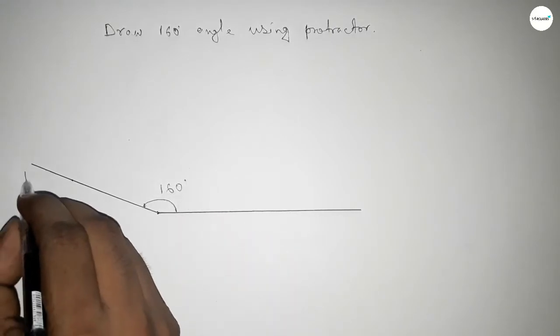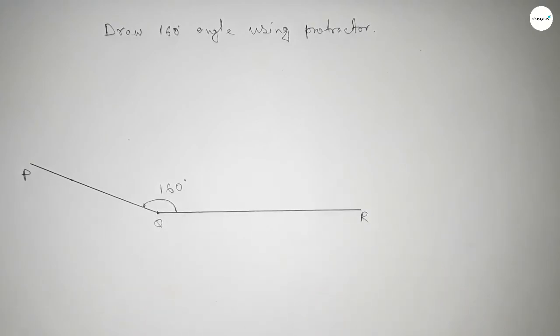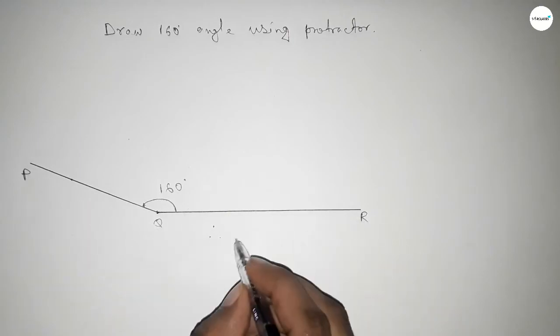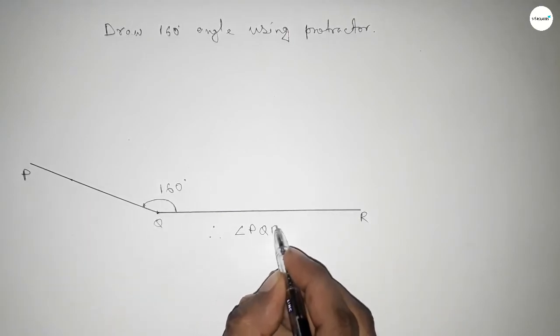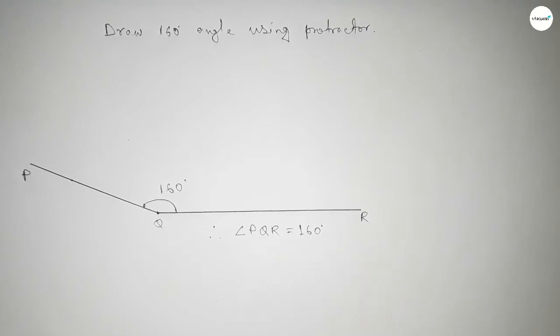Label the points as P, Q, and R. So angle PQR equals 160 degrees. That's all, thanks for watching. If this video is helpful, please share it.